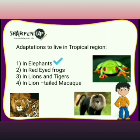Elephants have big trunks which they use as a nose and to pick up food and drink water. They use their tusks to tear the bark of trees and for fighting. Their large ears help them hear very soft sounds to sense danger. They also flap their large ears to cool themselves in hot and humid climates.